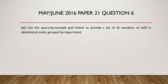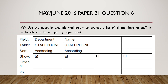Next part: use query by example to provide a list of all members of staff in alphabetical order, grouped by department. Both the staff name and department fields should be sorted in ascending order and set to display. So we have the department name and the name of the staff — both in ascending order and both shown.